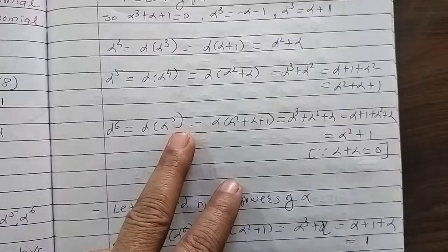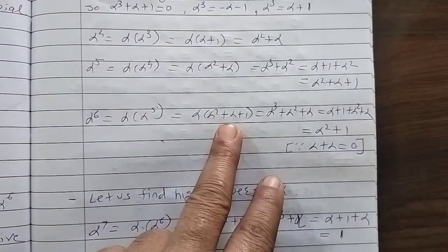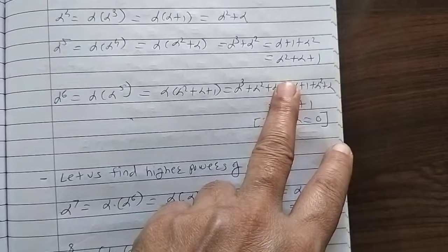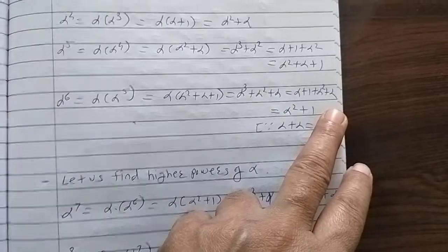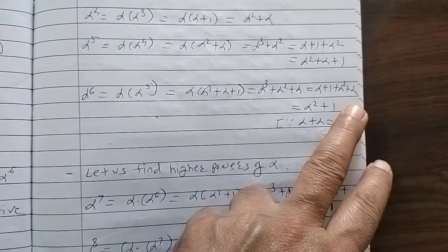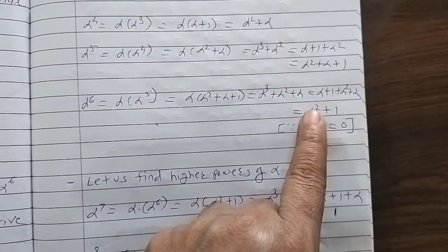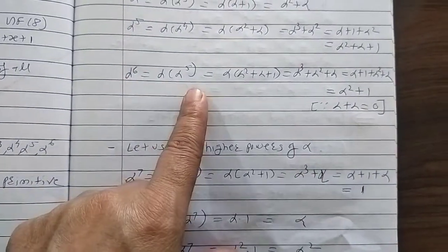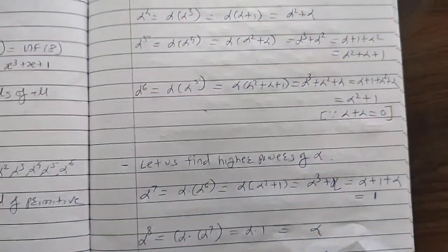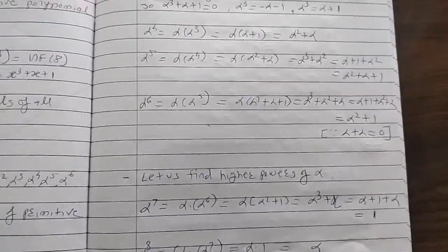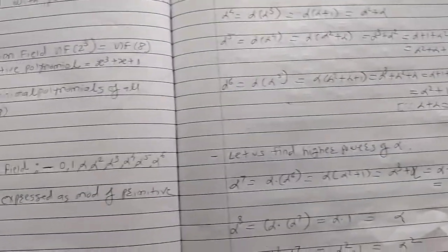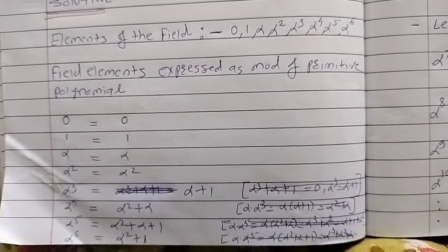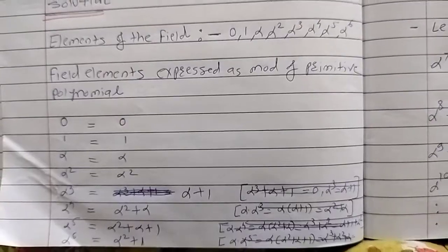α⁶ = α · α⁵. Since α⁵ = α² + α + 1, we get α³ + α² + α. Substituting α³ = α + 1: (α + 1) + α² + α. Since α + α = 0 (XOR), the α terms cancel, leaving α² + 1. So: α³ = α+1, α⁴ = α²+α, α⁵ = α²+α+1, α⁶ = α²+1.